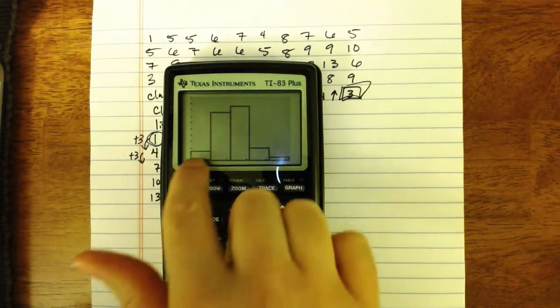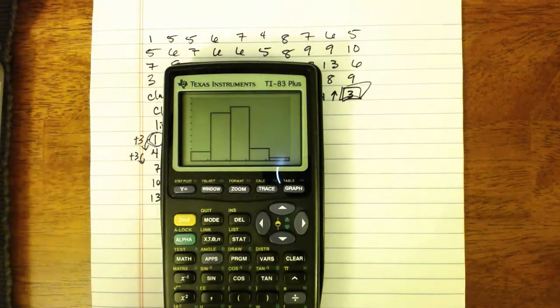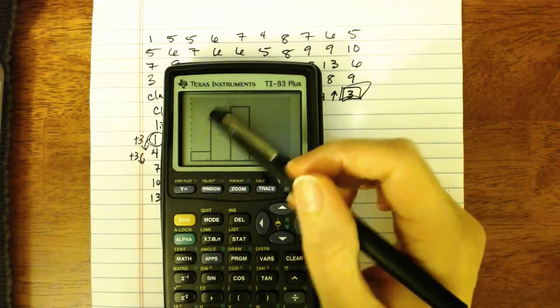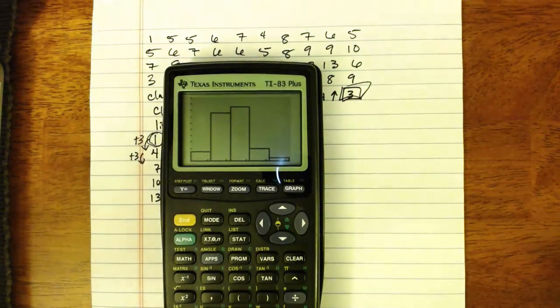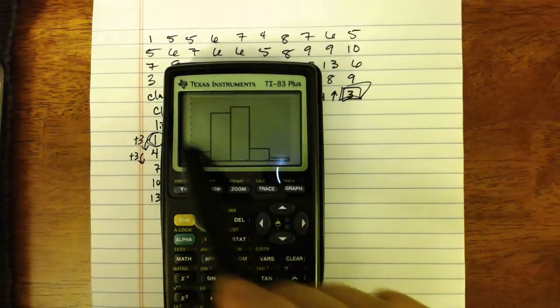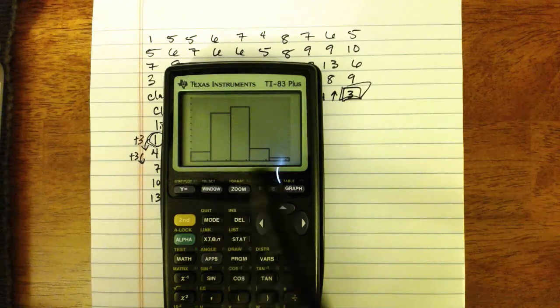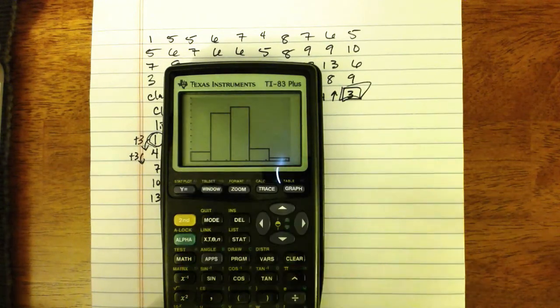So here's my histogram. You can see it has the five classes that we wanted. I can see it's a nice unimodal, somewhat symmetric, maybe slightly skewed right distribution.